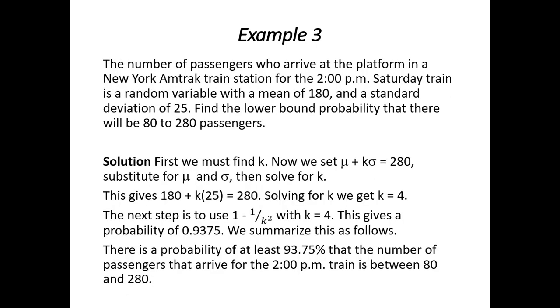In our last example, the number of passengers who arrive at the platform in a New York Amtrak train station for the 2 p.m. Saturday train is a random variable with the mean of 180 and a standard deviation of 25. Find the lower bound probability that there will be between 80 and 280 passengers.